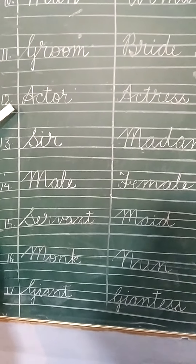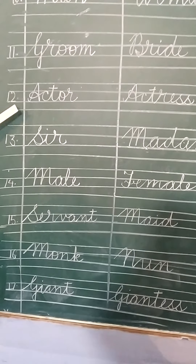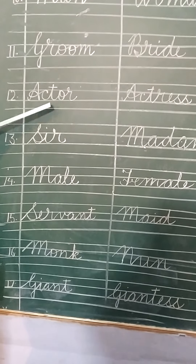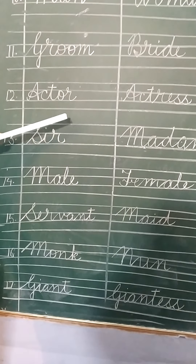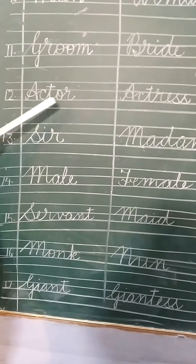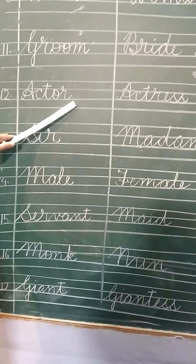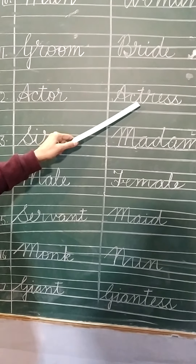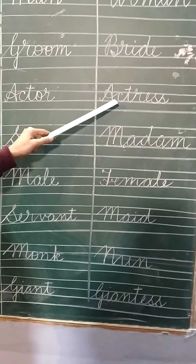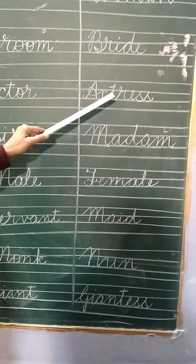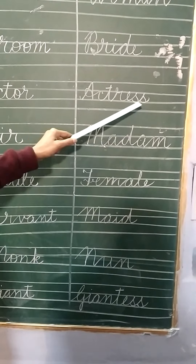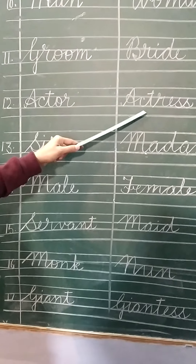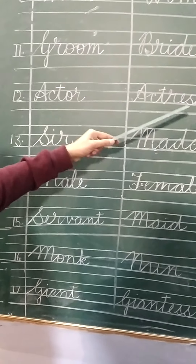The next one is actor. A-C-T-O-R, actor. Like Shah Rukh Khan, Aamir Khan, Amitabh Bachchan — they are actors. And the female of actor is actress. A-C-T-R-E-S-S. Actress means like Madhuri Dixit, Sridevi.